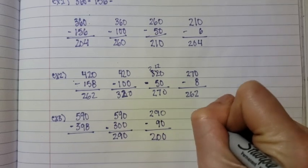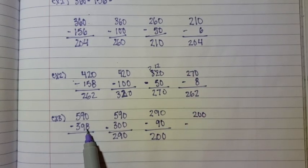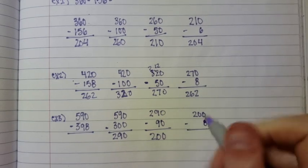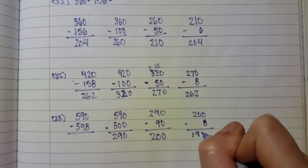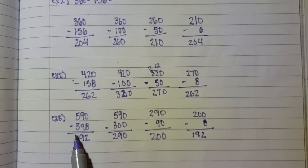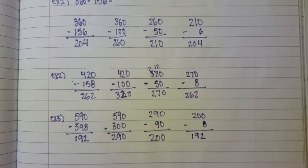Then you're going to take 200 and you're going to subtract the 8, or the 1's value, which is 8, giving you 192. So, 590 minus 398 equals 192.